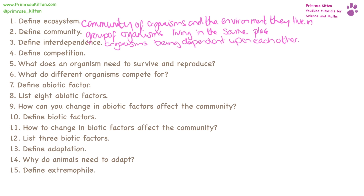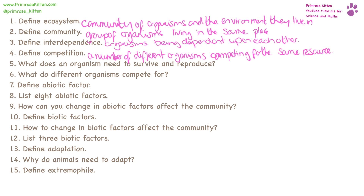Competition is where a number of different organisms are competing for the same resource. An organism needs a range of different things to survive and reproduce. Water and food are going to be the most essential things. Air is going to be made up of several different gases — this could be oxygen or carbon dioxide. Sunlight is going to be for warmth, and plants need it for energy, and we're going to need a habitat that is suitable.